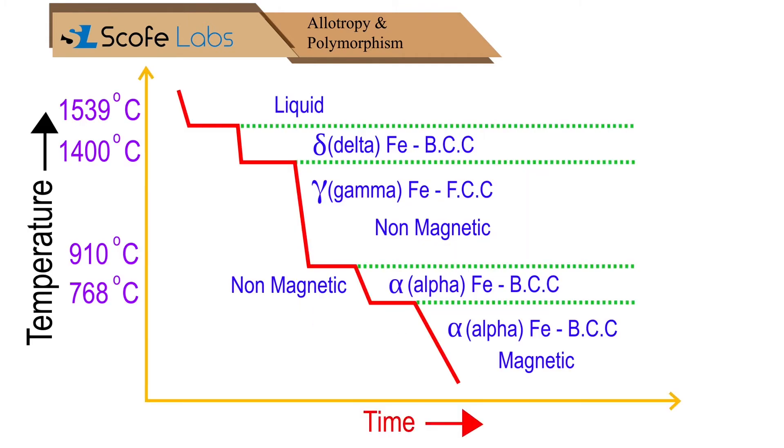Let's have a look at the time versus temperature graph for iron. Here, the iron is in liquid form above 1539 degrees Celsius. If it cools below 1539 degrees Celsius, the crystal structure of liquid is converted into BCC structure.